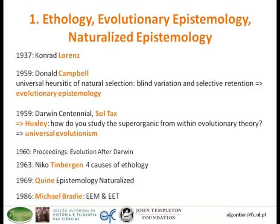Before people were introducing the units and levels of selection debate, Campbell was asking how he could universalize this formula. Now, evolutionary epistemology is a philosophical discipline that started with the idea to study knowledge as the outcome of evolutionary processes. Before Campbell there was Konrad Lorenz, and there is a very strong connection between evolutionary epistemology and ethology. Eventually in 1959 — the same year Campbell first published his paper — there was the Darwin Centennial in Chicago, organized by Sol Tax, an anthropologist and founder of the journal Current Anthropology.